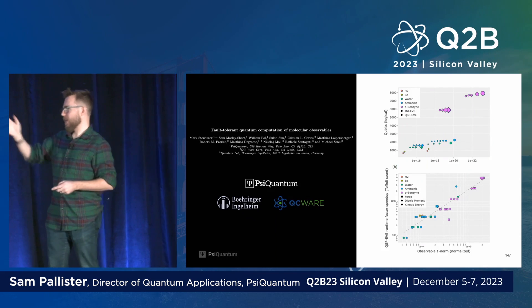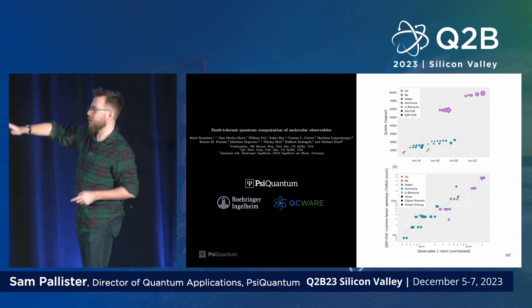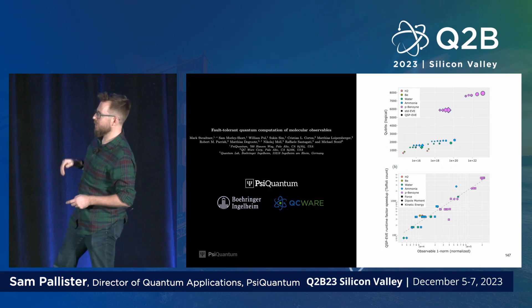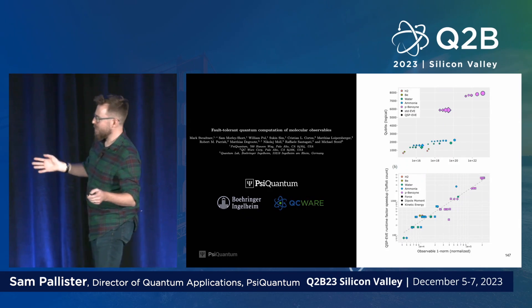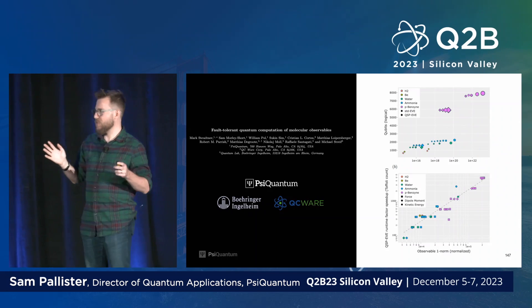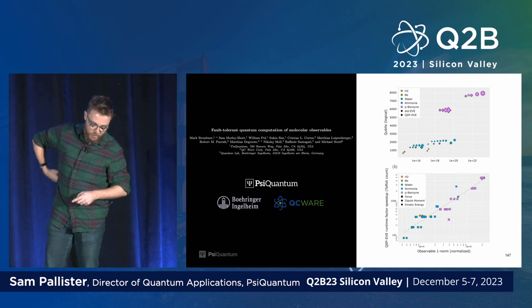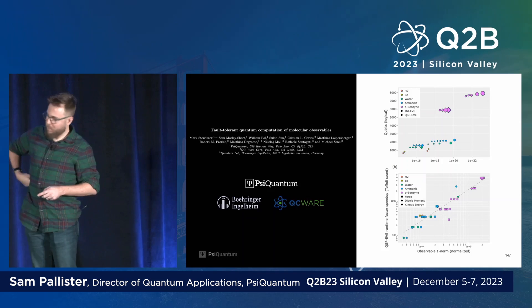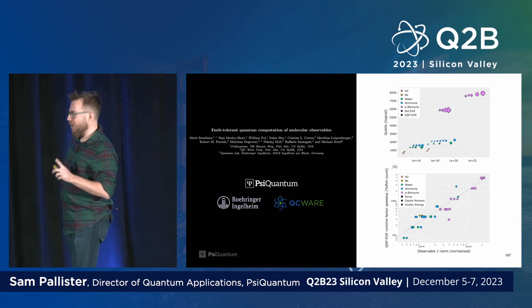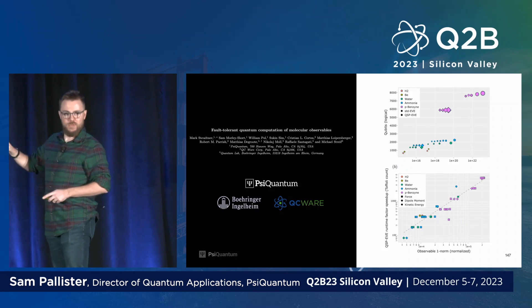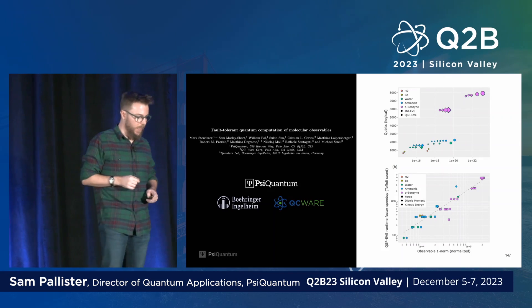It's worth noting that in building this algorithm, the high-level structure was known about three weeks into a year-long collaboration. The difficulty really isn't in deriving the high-level structure — it's in the fastidiousness needed to break that algorithm down into low-level primitives amenable to resource estimation, and then the meticulous bookkeeping required to resource-estimate by hand. That consumes 95% of the time needed to generate results like this. The output shows resource estimates for a variety of molecular systems, observables, and basis sets.